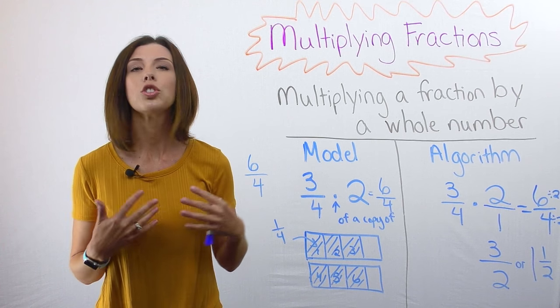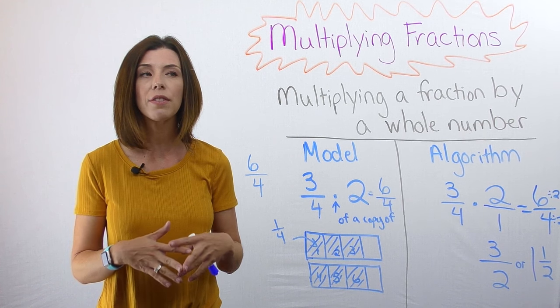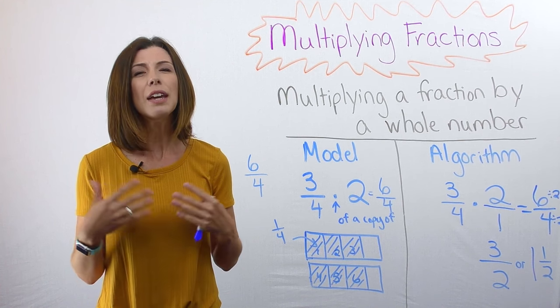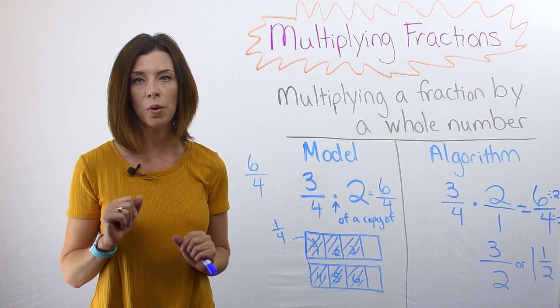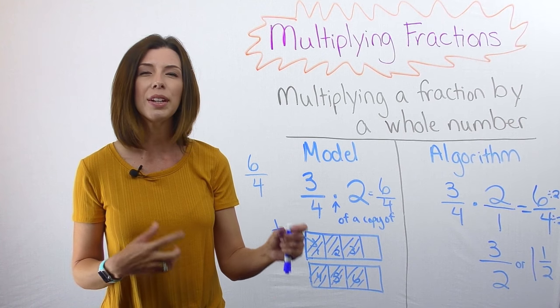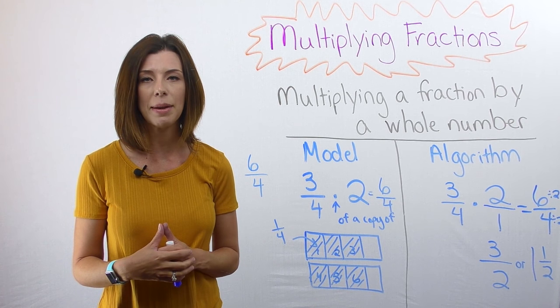Remember we started with two wholes. We wanted three-fourths of two whole candy bars. If we ask ourselves what is the unit, the unit is only one whole. So that's how I know I'm operating in fourths and not eighths, if that makes sense.